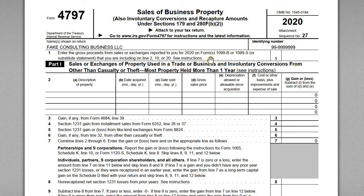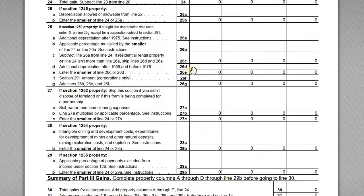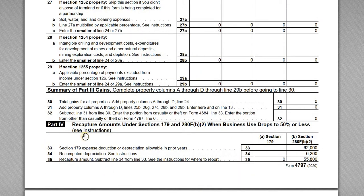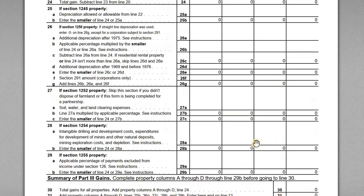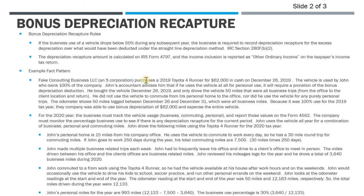Form 4797 is normally used when you sell business property, but it is also used for recapture amounts — involuntary conversions and recapture under sections 179 and 280F. At the very end of the 4797, Part IV is the recapture section: recapture amounts under sections 179 and 280F when business use drops to 50% or less. These are the sections of the forms we need to pay attention to.